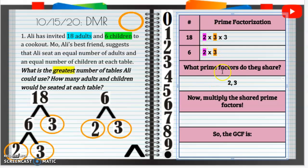Remember, we pull 1 from each. Now, we are going to multiply these factors. So 2 times 3. We know that equals 6. So our greatest common factor is 6.